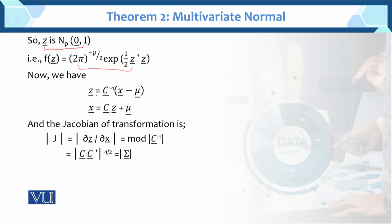Now, we have z equals c inverse times (x minus mu). From this, x equals c times z plus mu. The Jacobian of the transformation, which is the partial derivative of z with respect to x, gives the mod of the determinant of c inverse. The mod of the determinant of c inverse, where c times c prime equals sigma, gives the determinant of sigma raised to the power minus one-half. So we obtain the Jacobian in terms of the determinant of the variance-covariance matrix.